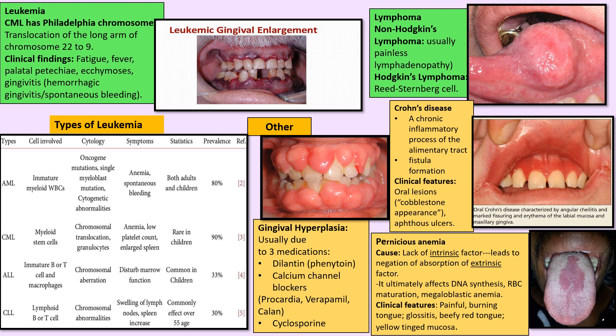Hodgkin versus non-Hodgkin lymphoma: in non-Hodgkin we have Burkitt lymphoma, the African variety. The main difference between Hodgkin and non-Hodgkin is the presence of Reed-Sternberg cells histologically, which are only seen in Hodgkin. This is Crohn's disease, showing cobblestone appearance and fistulae formed in the alimentary tract.